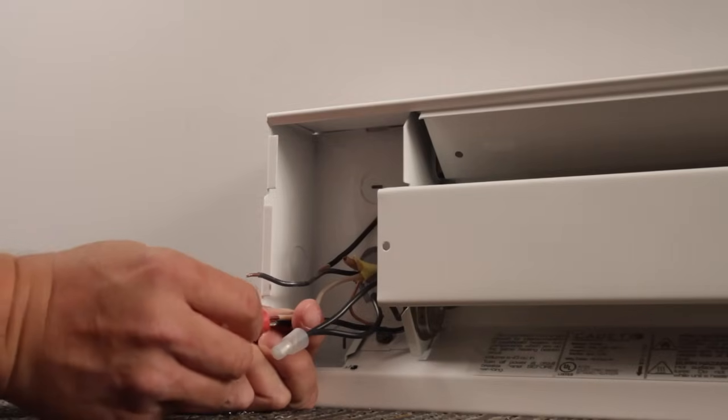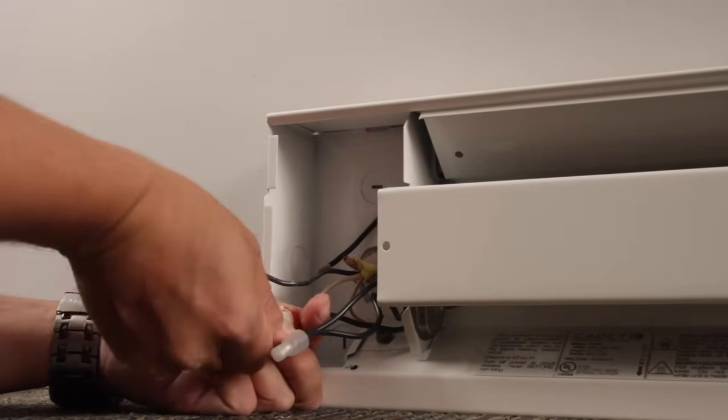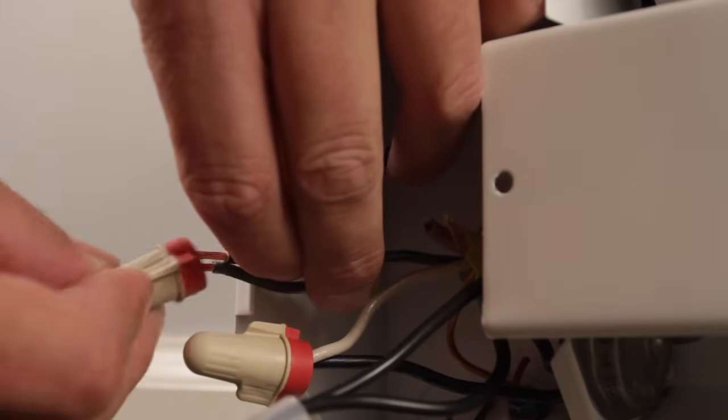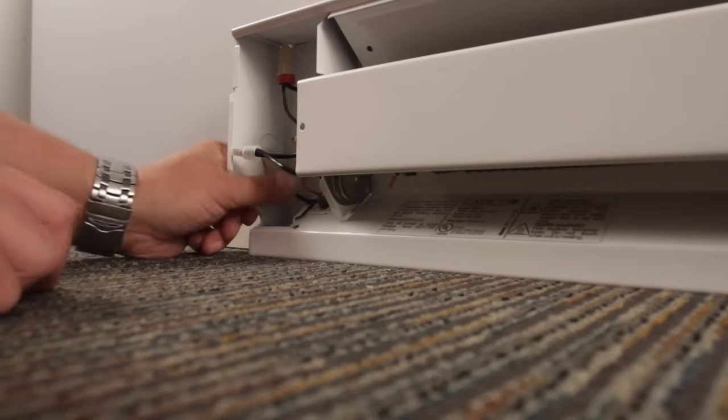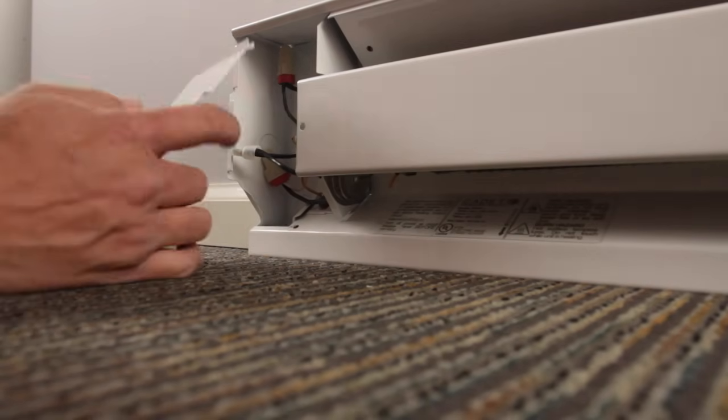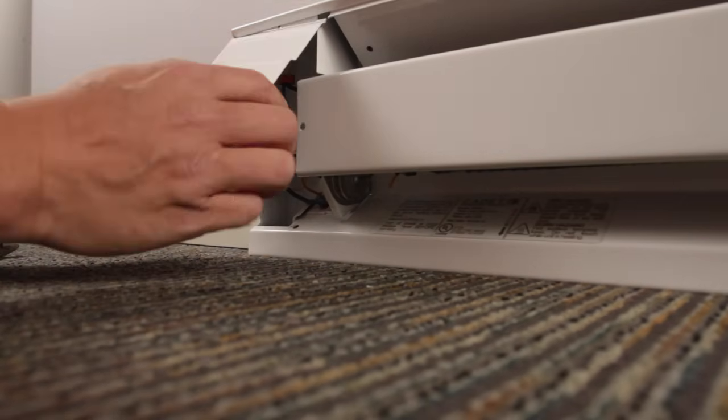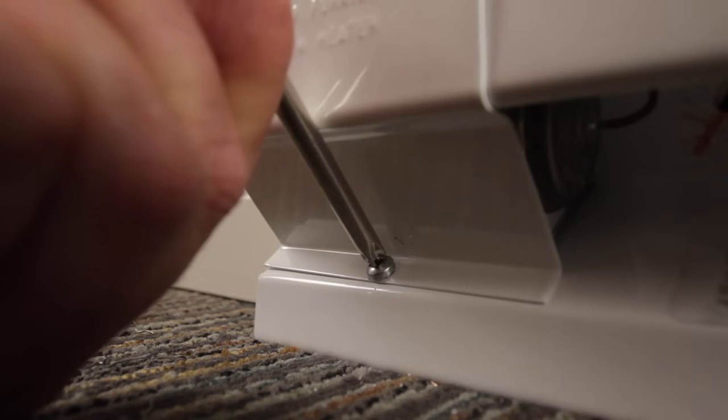Connect one black wire from the heater to the white wire from the wall. Now connect the last black wire from the heater to the black wire from the wall. Safely tuck all wires in the heater wiring compartment and attach the cover plate with the provided screw.